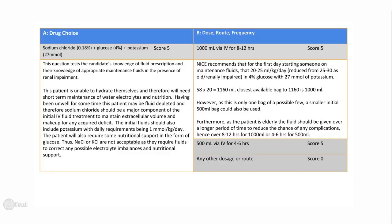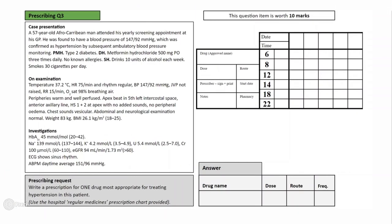Now let's move on to our final question. This is a 57-year-old Afro-Caribbean man who attended his yearly screening appointment at his GP. He was found to have a blood pressure of 147 over 92, and this was confirmed as hypertension by subsequent ambulatory blood pressure monitoring. His past medical history includes type 2 diabetes, for which he takes metformin. He has no known allergies, drinks 10 units of alcohol each week, and smokes 30 cigarettes a day. There is not much to note in examination with the normal temperature, a heart rate of 75, and a non-elevated JVP. His respiratory rate is 15 and his oxygen saturations are 98% on room air. However, he does have a raised blood pressure of 147 over 92.